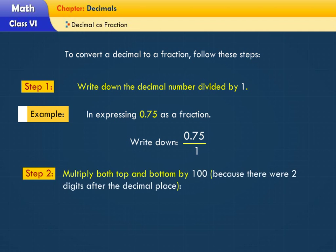Step 2: Multiply both top and bottom by 100, because there were two digits after the decimal place.